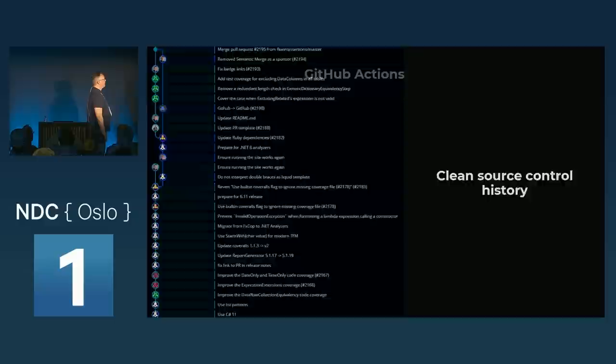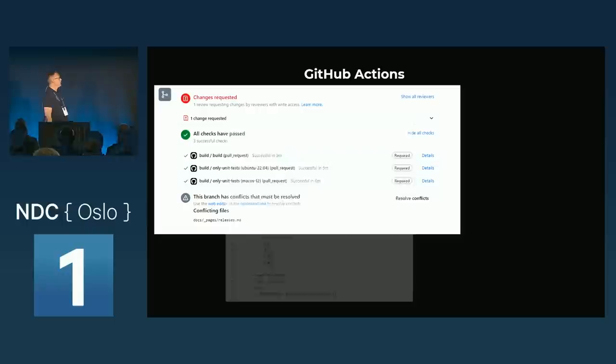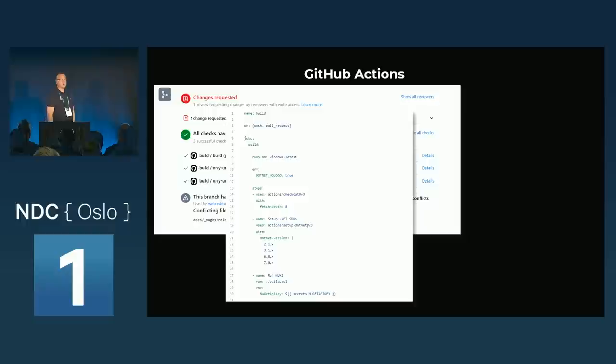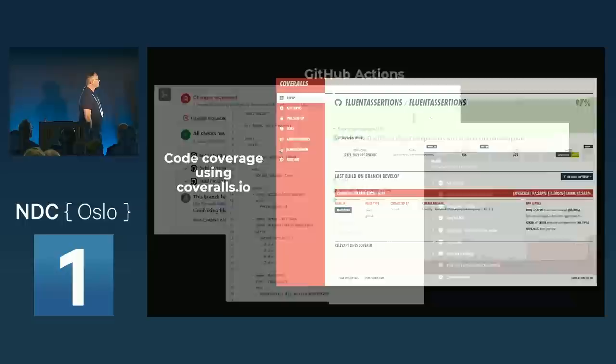Definitely don't force push to develop. GitHub Actions — I probably don't have to explain that. It's GitHub's build engine, technically the same as Azure DevOps these days, even the build agents are the same. We have a fairly simple YAML script, though it's longer than you'd expect because we build for multiple .NET frameworks.